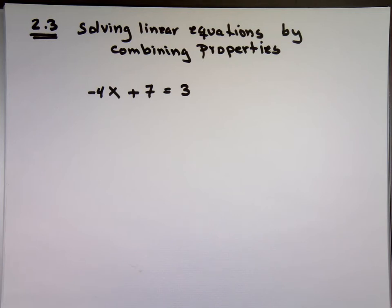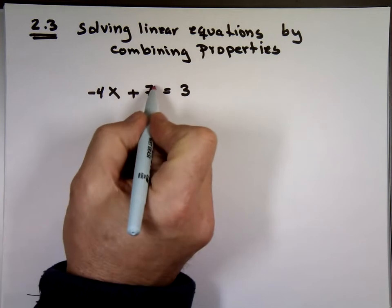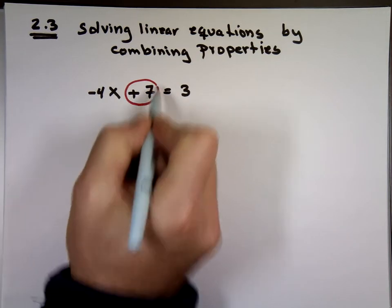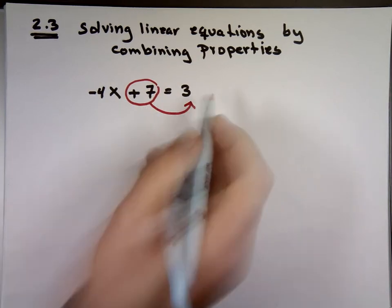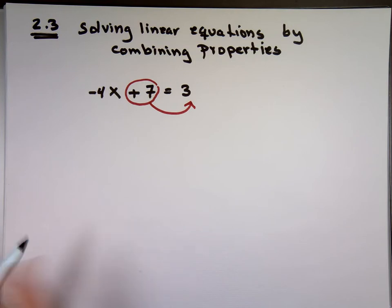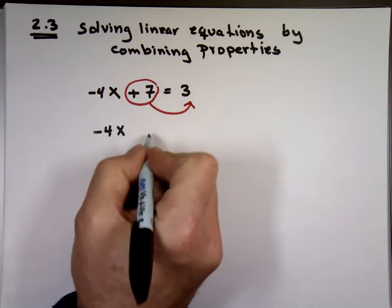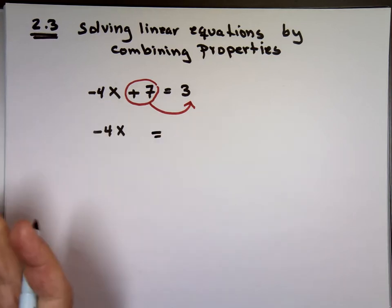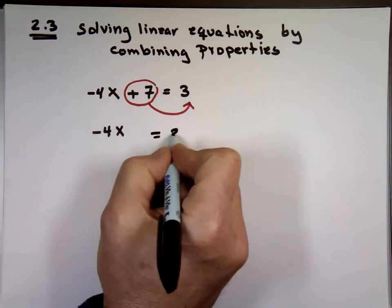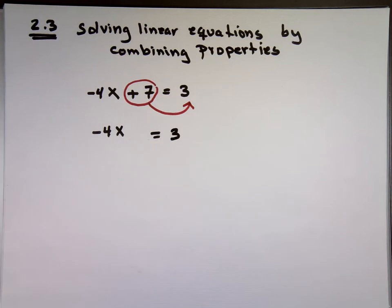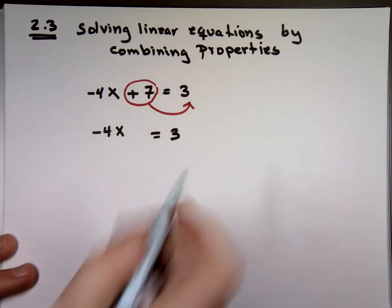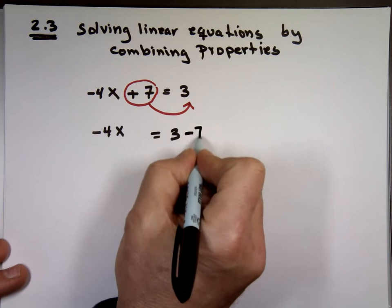Remember the goal, all the x's on one side, all the numbers on the opposite side. I can accomplish this if I take the plus 7 and move it to that side. If I do that, change side, change sign. Notice negative 4x staying on the same side, so there's no change in that. The 3 is not moving, there's no change in the sign. But the plus 7 is going to go there, becomes what? Negative 7.